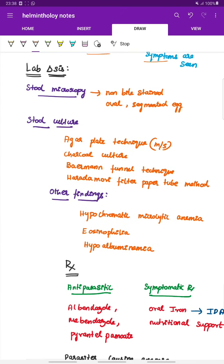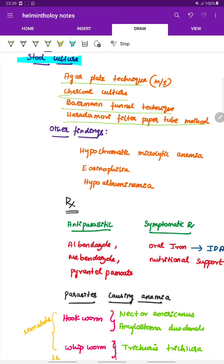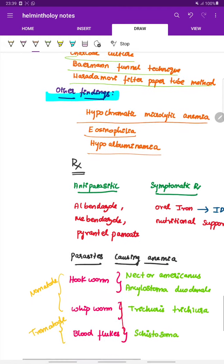Next is the lab diagnosis. First is stool microscopy, it shows non-bile stained oval segmented egg. Next is stool culture, performed in agar plate technique, charcoal culture, Baermann funnel technique, Harada-Mori filter paper tube method. Other findings include hypochromic microcytic anemia due to iron deficiency, eosinophilia, and hypoalbuminemia.